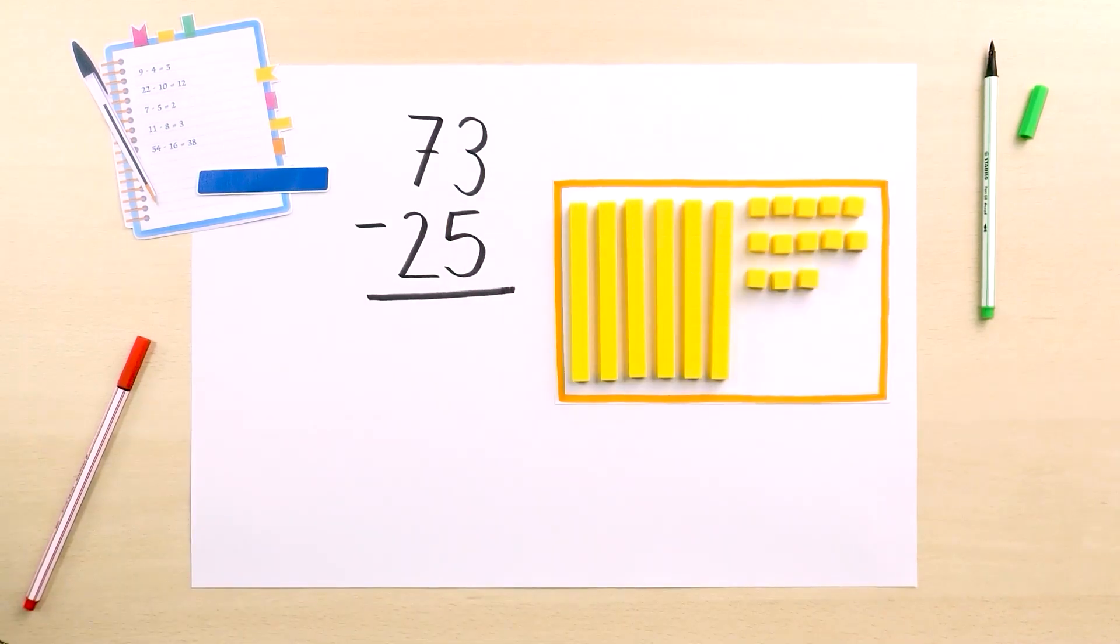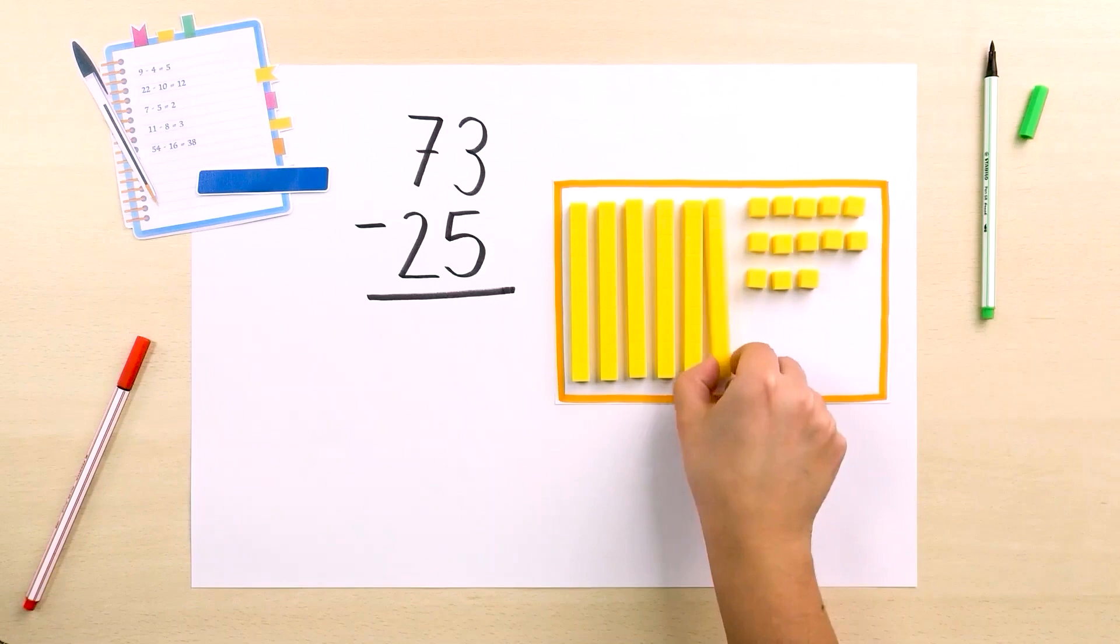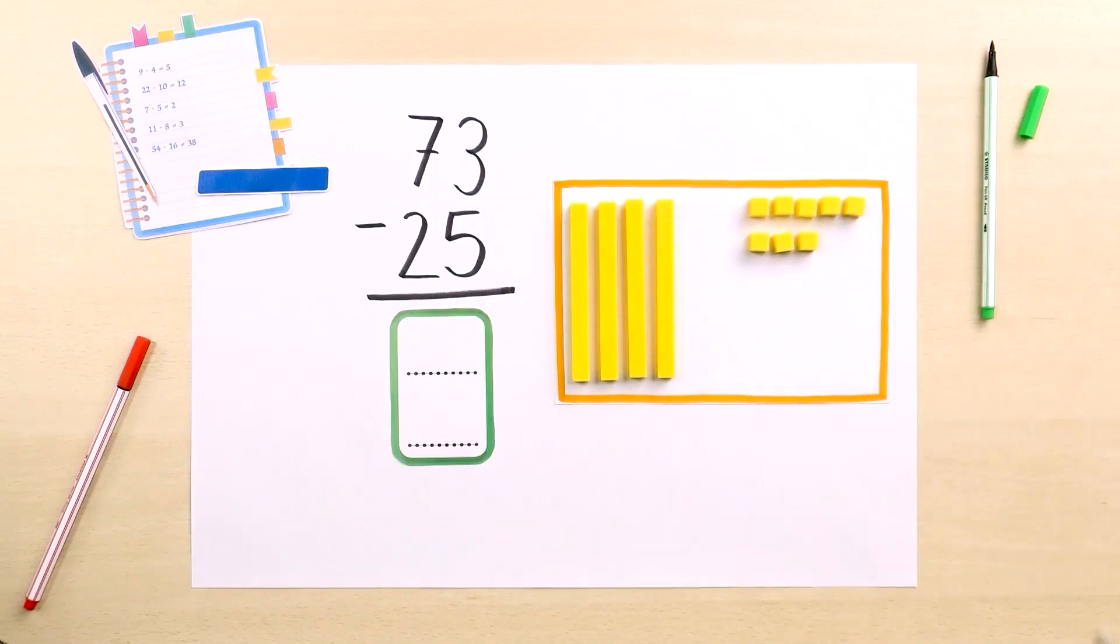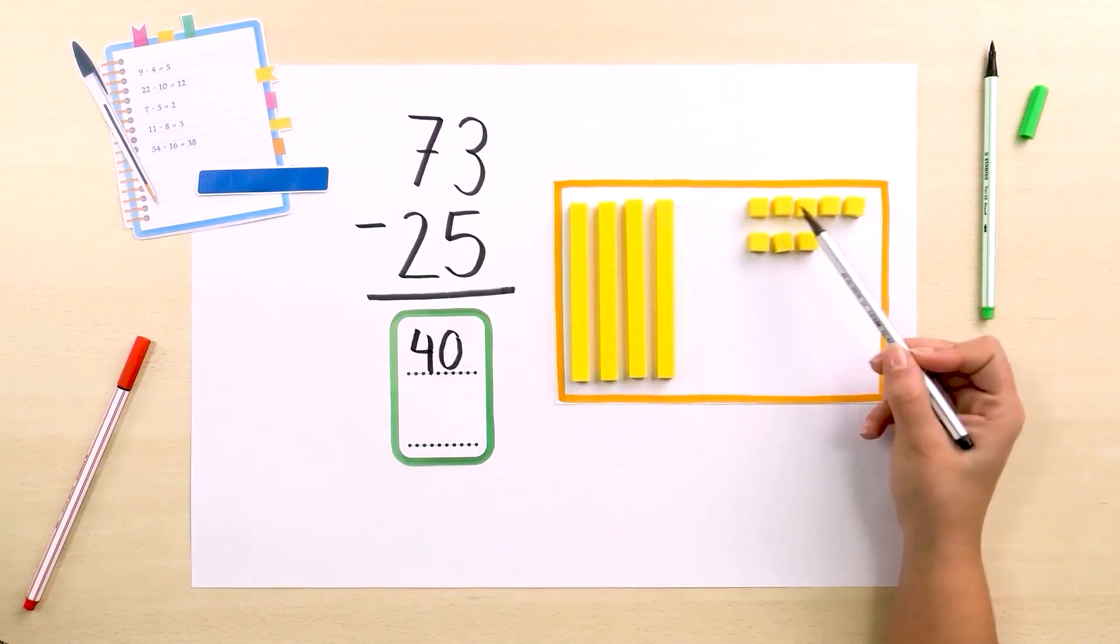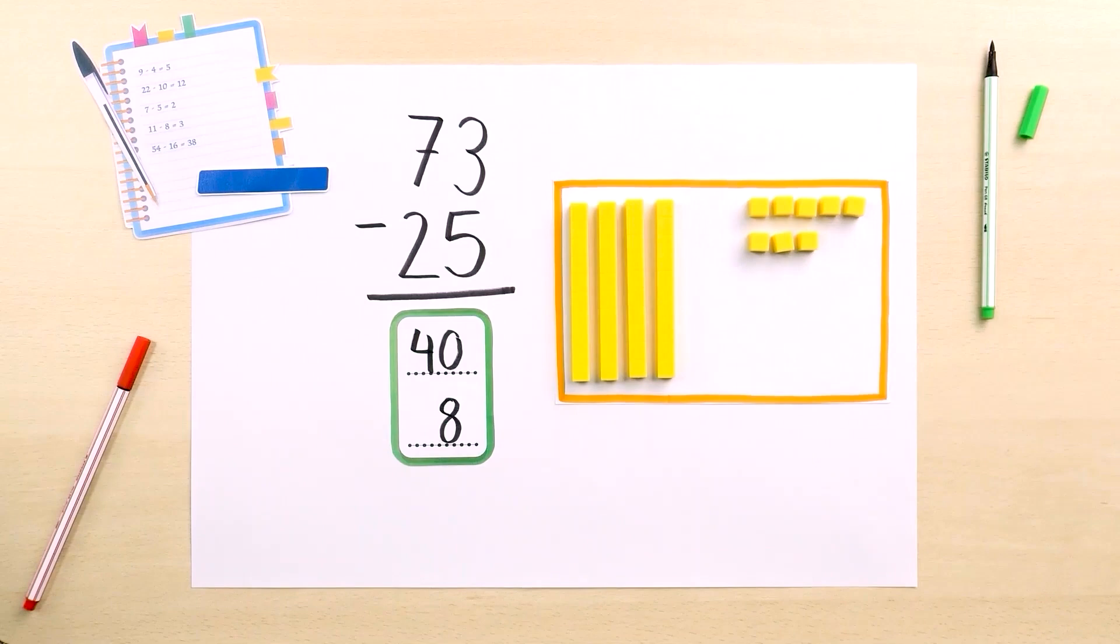By doing so, we represent 73 as 60 plus 13. Now we can take away 2 bars and 5 cubes. In total, we are left with 4 bars, in other words, 40, and 8 cubes. So 73 minus 25 equals 48.